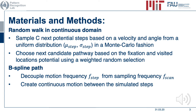Therefore we propose the following key changes. We change the random walk to the continuous domain. Next, candidate steps are drawn from a uniform distribution based on a velocity and an angle in a Monte Carlo fashion.